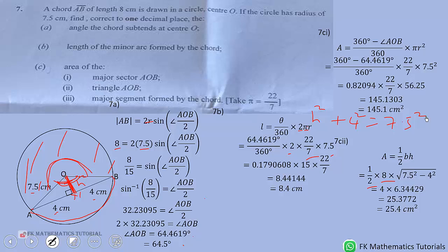Now let's look at major segment formed by the chord. So major segment formed by the chord is this. This segment. So you can see that when we add the area of the triangle...